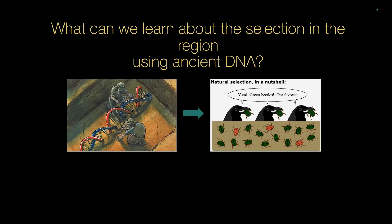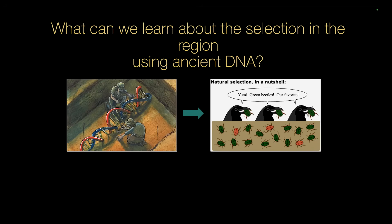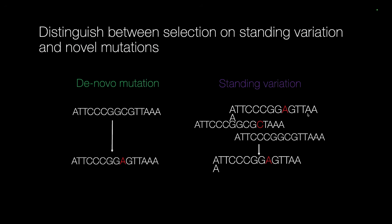Looking at the population history of Central Asia through time, what can we learn about selection using ancient DNA? The region has experienced cultural transformation, migration, admixture, and developments such as mobile pastoralism. What is really revolutionary about ancient DNA is that it allows us to study selection in a different way — distinguishing between selection on standing variation versus novel mutations. Looking at modern populations, we can only see the current state; going into the past, we can see if a mutation is truly new or was already present in standing variation and selected for due to a new environmental pressure.